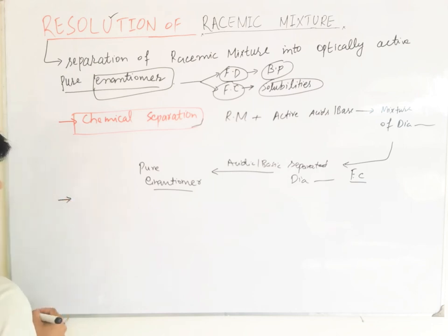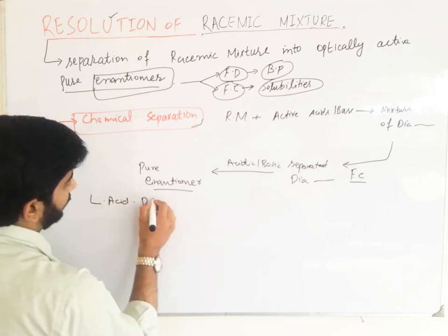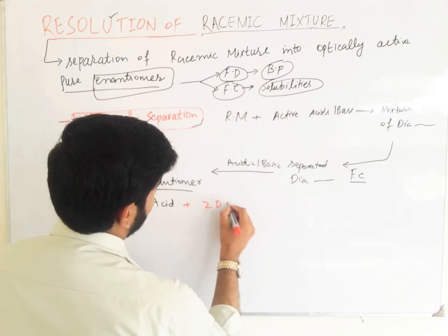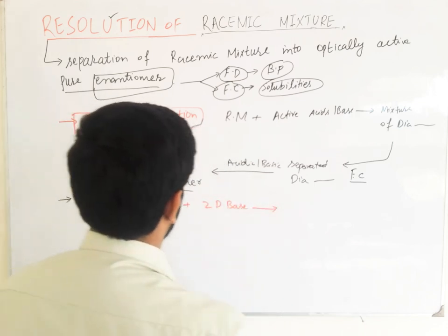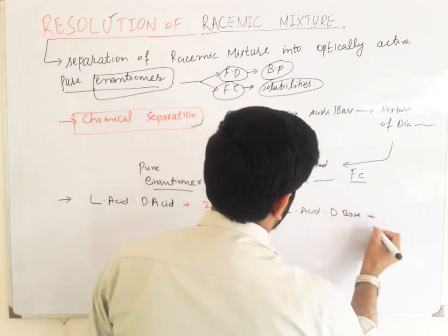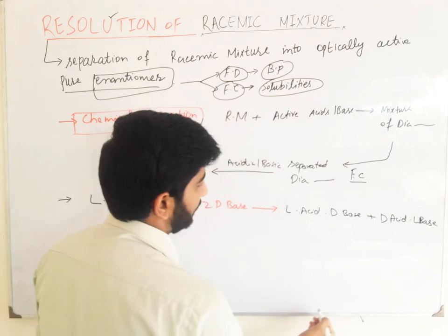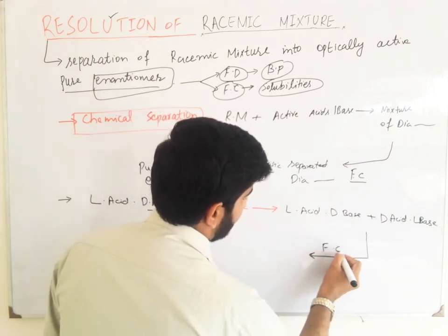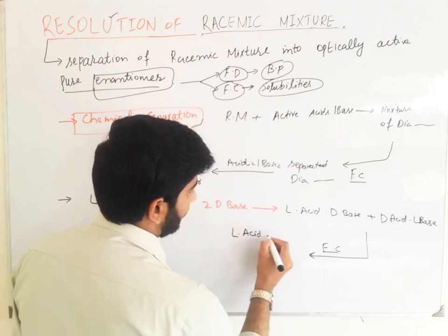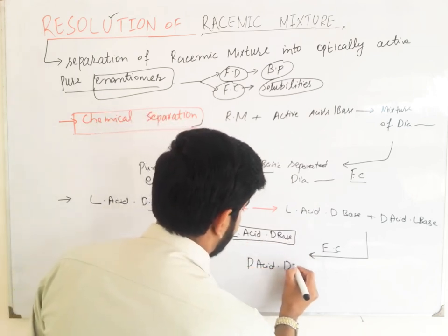For example, if we have a racemic mixture of levo-acid and dextro-acid, we treat it with a dextro-base. Then we get a mixture of diastereomers: l-acid·d-base plus d-acid·l-base. This is a mixture of diastereomers. Then we perform fractional crystallization to convert the mixture of diastereomers into separated diastereomers: l-acid·d-base and d-acid·d-base.